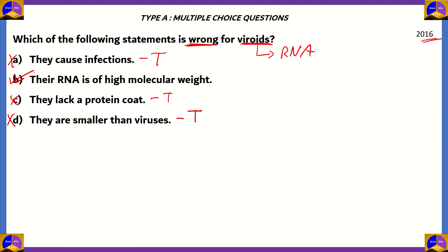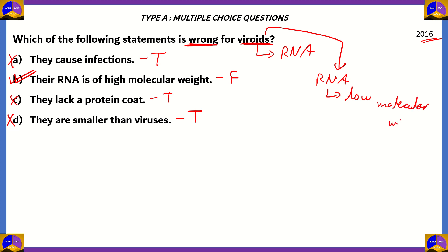That makes option B the correct option, because the statement 'their RNA is of high molecular weight' is incorrect. The fact is that for viroids, their RNA is of low molecular weight — it has to be, because viroids are smaller than viruses. Using that relation, the molecular weight of their RNA has to be lower. So option B is the correct answer — the wrong statement for viroids — in this question, also asked in 2016.